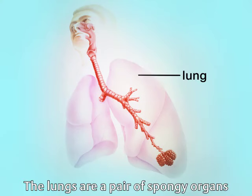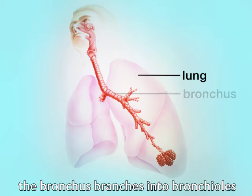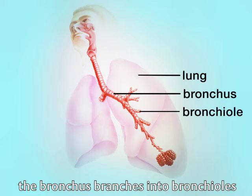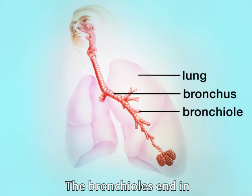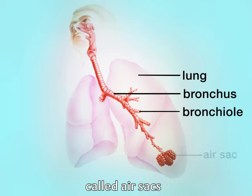The lungs are a pair of spongy organs. In each lung, the bronchus branches into bronchioles. The bronchioles end in a large number of cup-like structures called air sacs.